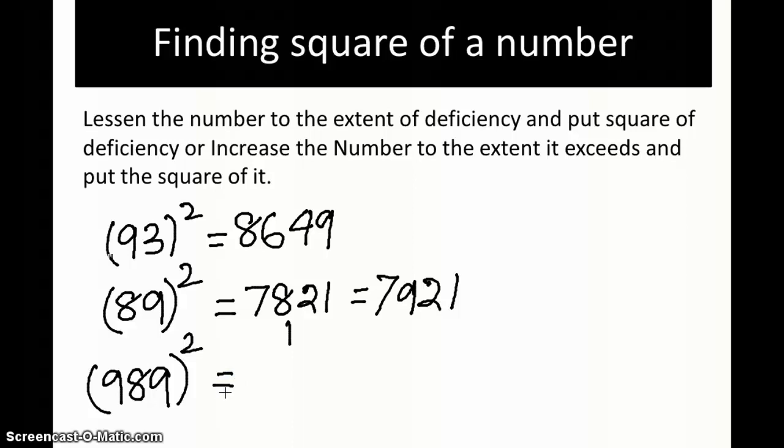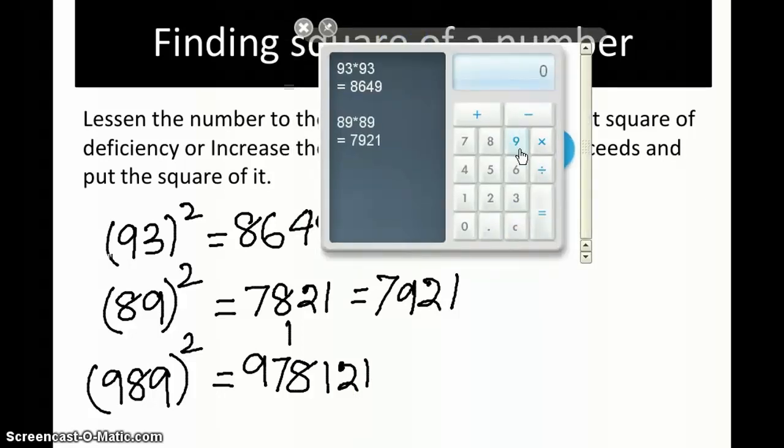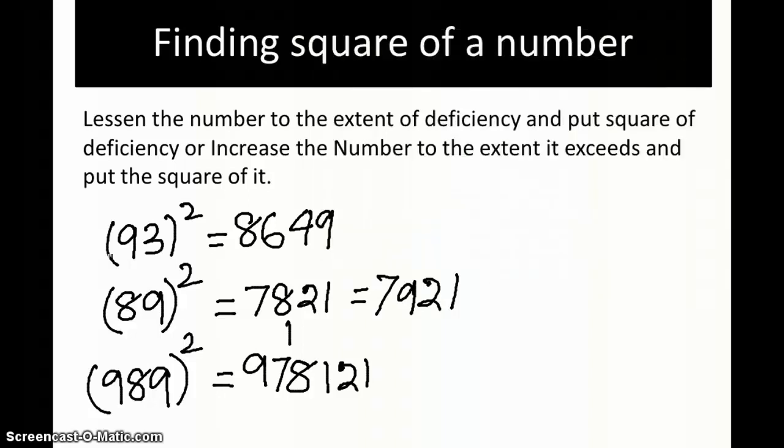In this case our base is thousand. How much is 989 less than 1000? That is 11. So lessen it again by 11, which gives me 978. Then put the square of the deficiency, which is 11 squared, which is 121. In this case I'll put 121 because our base is 1000, so we can keep three numbers here. That's all, the answer is 978121. Let's check: 989 into 989 equals 978121. You can imagine that with a single line we are able to write the answer.